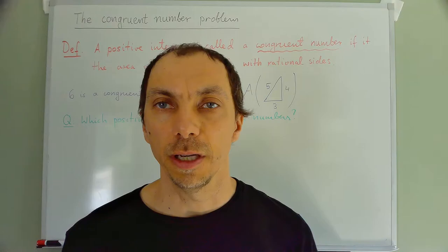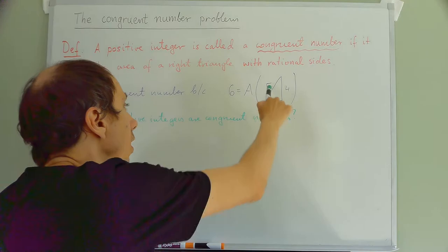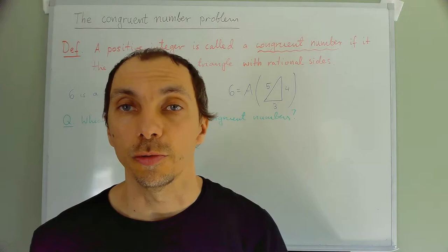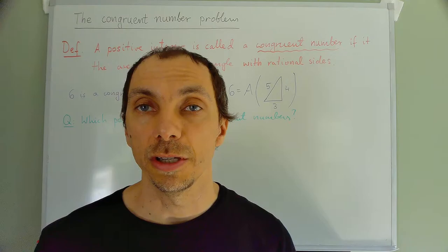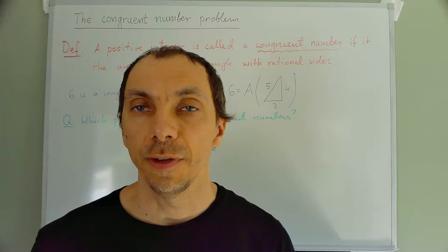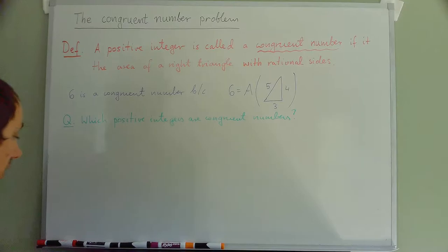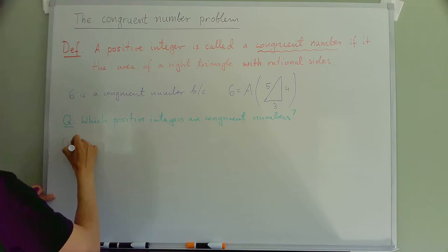One thing to notice is the following: if I increase, for example, each of these sides by a factor of 2, then the area increases by 4. So 6 times 4 would also be a congruent number. If I increase each of these sides by 3, then the area increases by 9. So 9 times 6 is also a congruent number. In fact, if I take any n and increase the sides by a factor of n, then 6n² is also a congruent number.